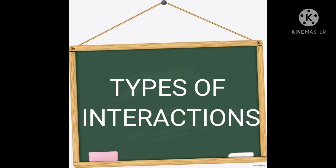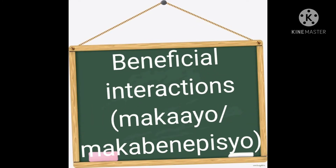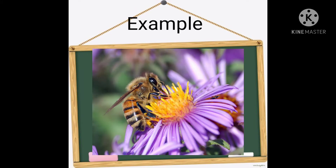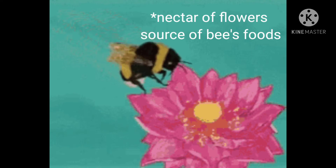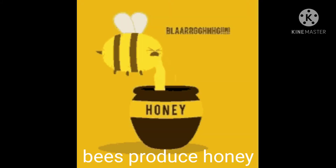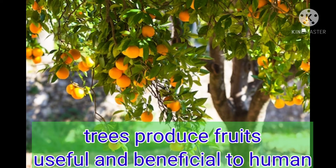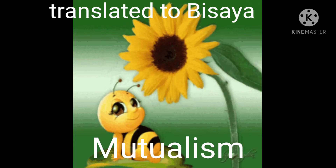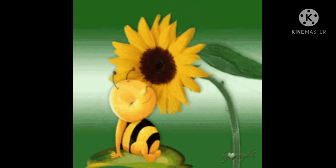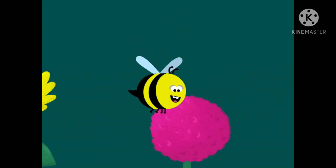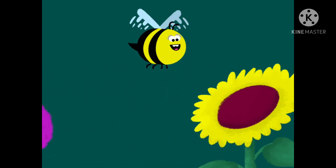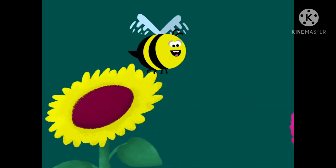The type of interaction where both species benefit from the relationship is called mutualism. Example: a flower and a bee. The nectar of flowers is the source of bees' food. Pollen grains help in fertilization and producing fruits. Bees produce honey and trees produce fruits, which are useful and beneficial to humans. In mutualism, both organisms benefit from each other.